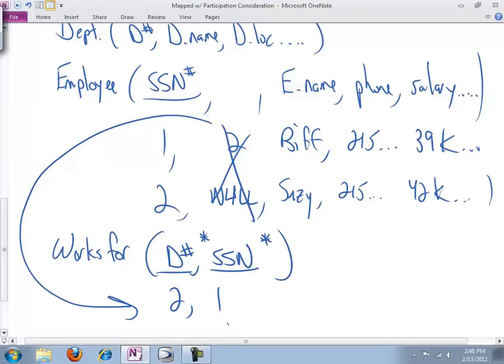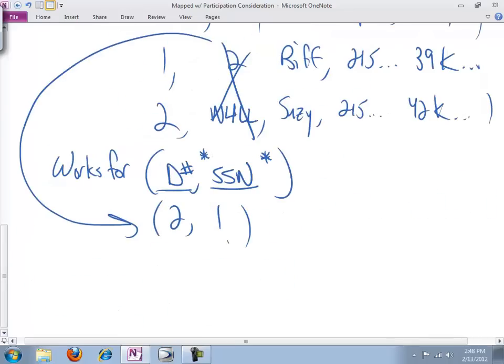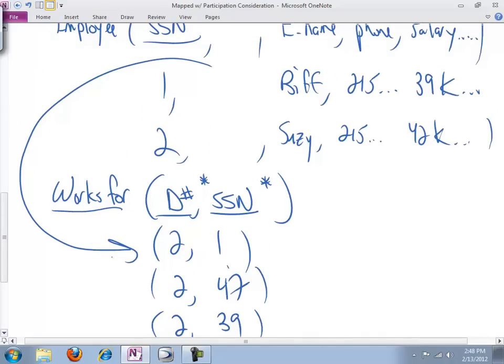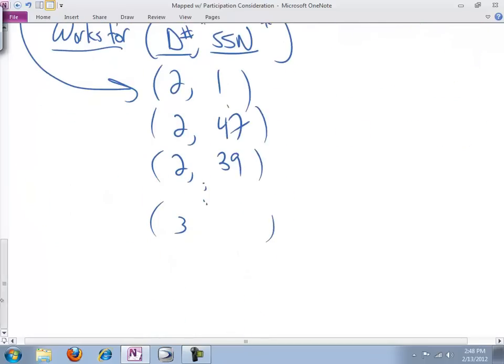But what happens with Susie? Susie, null. What does that mean? No entry. If Susie doesn't have a department, we don't make an entry in the works for department. In the works for table. So there will be no null values here. And every time there is a pairing of an employee and a department, then we will create a new entry in this table. And so we will have entries like two and one. And who else works in department two? Along with Biff, there might be, you know, 47 and two and 39. Whoever happens to work in whichever department, all the departments. What you will never ever see, ever, is a null value in this works for table. And so that is what we are looking to achieve with the mapped with partial consideration. And that's exactly what we get. So there's the benefit.